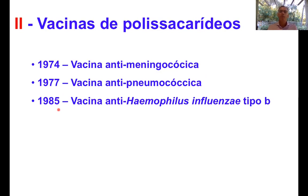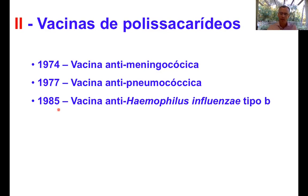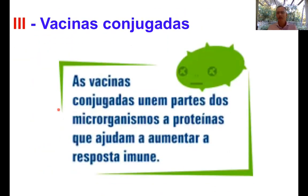Porém, como o professor Zanetti mostrou no vídeo sobre resposta imune, os polissacarídeos são pouco imunogênicos. A principal razão por eles serem pouco imunogênicos é que eles não são reconhecidos pelos linfócitos T. Então, essas vacinas, no final das contas, foram muito pouco imunogênicas. Logo em seguida, na década de 80, vai surgir uma estratégia para superar essa pouca imunogenicidade das vacinas de polissacarídeos, que é fazendo-se vacinas conjugadas.